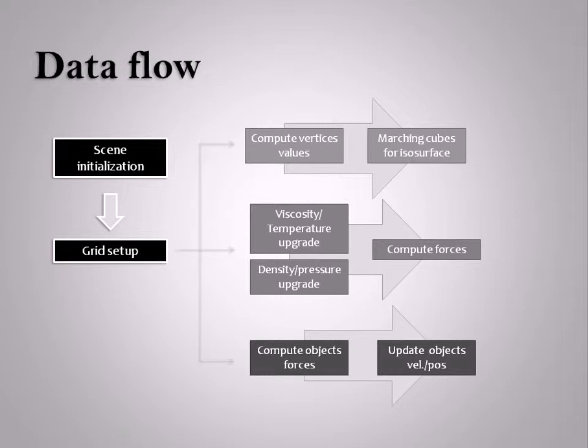Our data flow is the SPH one. Once the scene is initialized, we partition the scene into grids. Then particle forces are calculated to update the particles, and grid vertex values are obtained for the Marching Cube algorithm. Object forces are also computed to update object position and velocity.